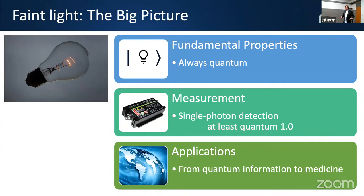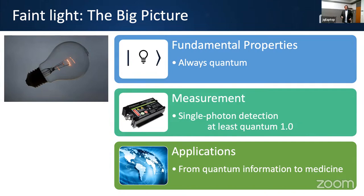From fundamental properties and properties of the measurement, you go to applications and try to see what can be done in the real world. Faint light occurs naturally — in medicine signals are very dim, in quantum information states are faint by definition, and in long-distance communications no matter how much signal you send, by the end of your channel you're probably seeing next to nothing.